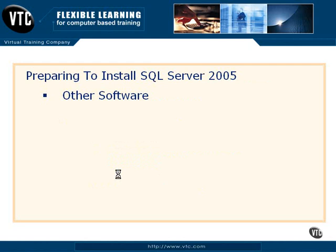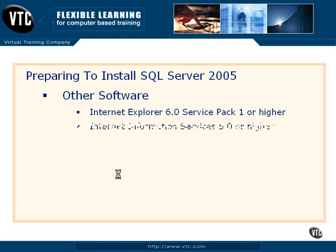There's some other software you need to have — not too surprising, but worth being aware of. You need Internet Explorer 6.0 with Service Pack 1 or higher, which is required for the Microsoft Management Console. You also need Internet Information Services 5.0 or higher, which is required for reporting services — we'll take a quick look at that later in the course. TCP/IP networking also needs to be up and running, though most people already have that going.